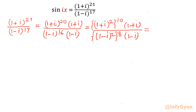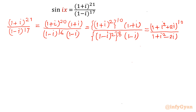Now expand the squares. So I will write: 1 squared is 1, so (1+i)^2 = 1 + i² + 2i, giving [(1 + i² + 2i)]^10 divided by [(1 + i² - 2i)]^8, and (1+i) over (1-i) as it is.